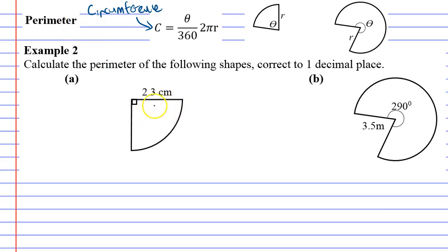Because these are not full circles, we use a formula that is slightly different. You'll notice it's got the exact same formula as the other one, but it has a fraction in front of it, which in this case is theta over 360.